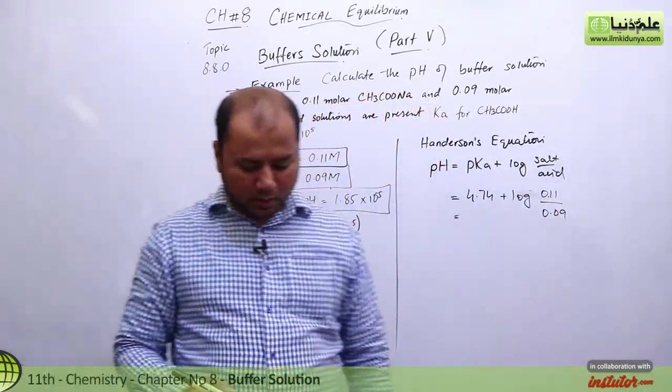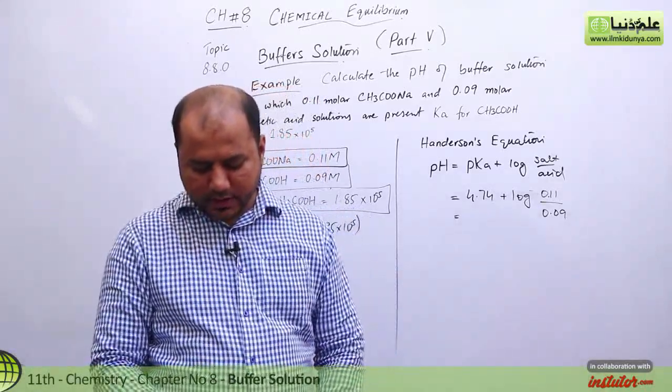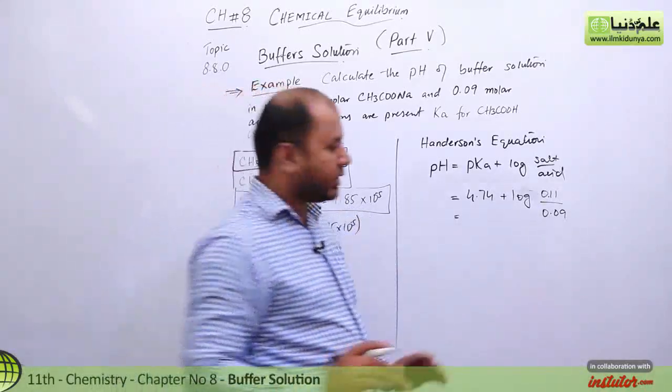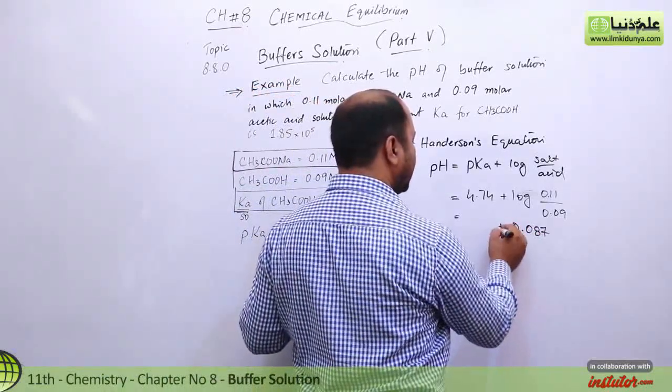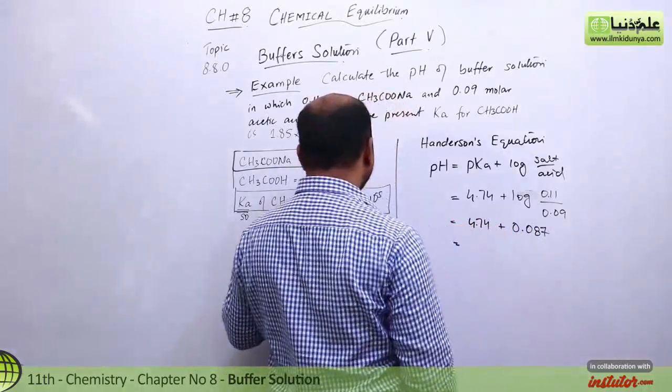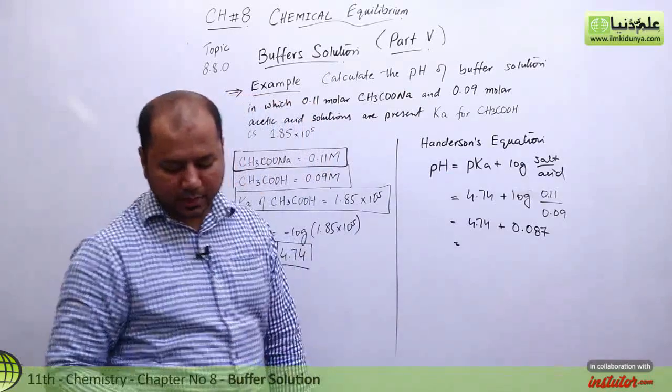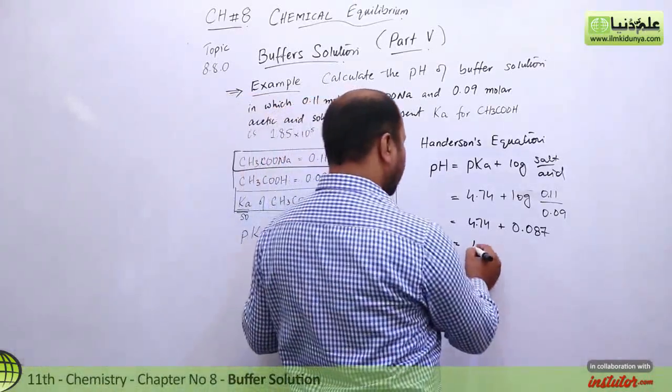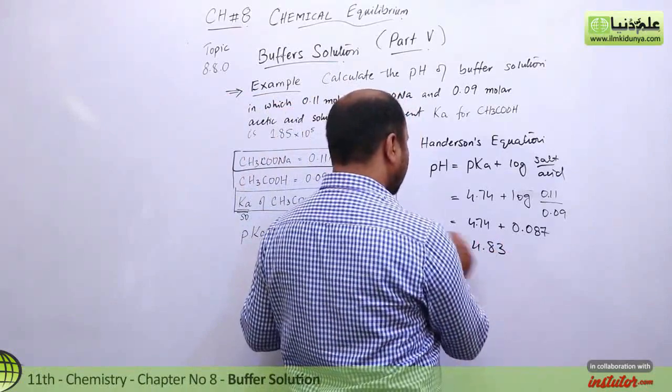Taking the log of 0.11/0.09 gives us 0.087. So 0.087 plus 4.74 equals 4.83. That's the pH of the buffer solution with these concentrations.